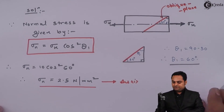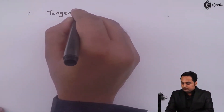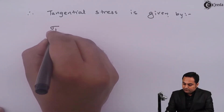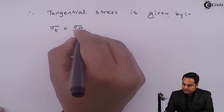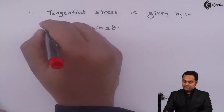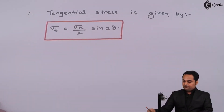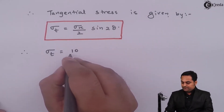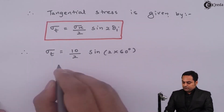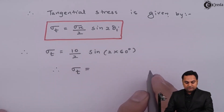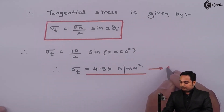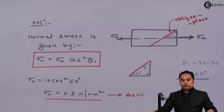In a similar manner we will calculate tangential stress. Tangential stress is given by Sigma t = (Sigma X / 2) × sin(2 × theta 1). This is the formula to calculate tangential stress, also called shear stress. Sigma X is 10, and sin(2 × 60°) = sin(120°). Therefore, the tangential stress comes out to be 4.33 Newton per mm square. This is the second answer.